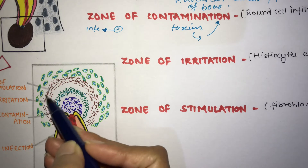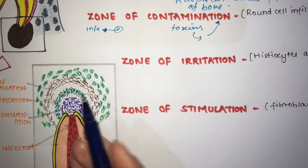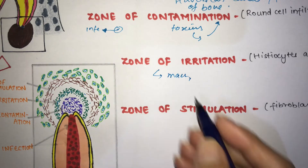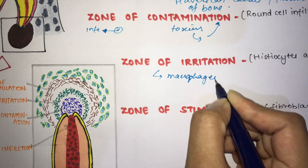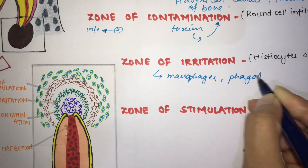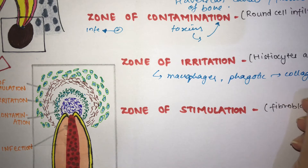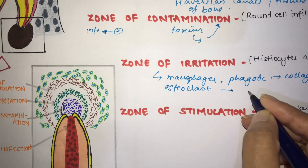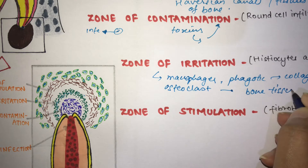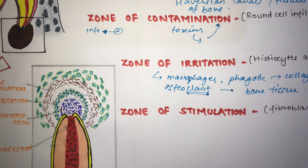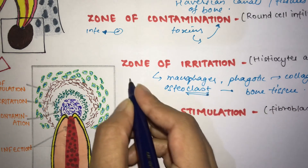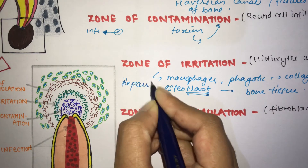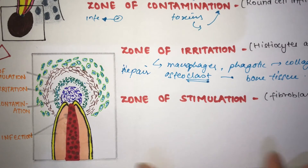In the Zone of Irritation, macrophages and phagocytic cells are present. These cells digest collagen fibers, while osteoclasts attack bone tissue, leading to bone resorption. The histological picture of this zone signifies the body's attempt to initiate repair — bone repair begins in the Zone of Irritation.